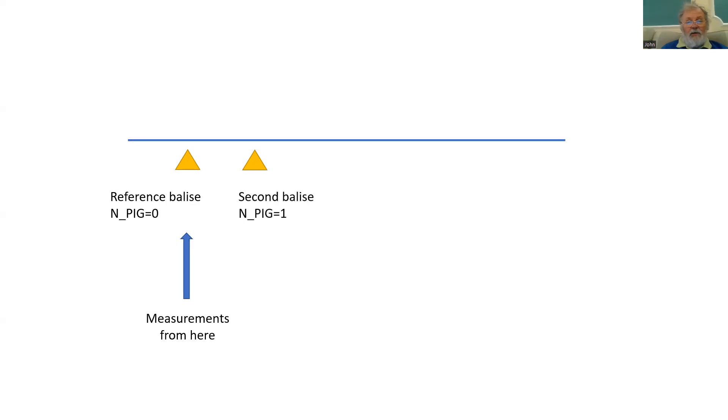The second and subsequent balises will have a value of N_PIG of 1, 2 and 3. So that gives us a group. And in the ascending order of N_PIG is what is defined as the nominal direction. And obviously the descending direction is the reverse direction.